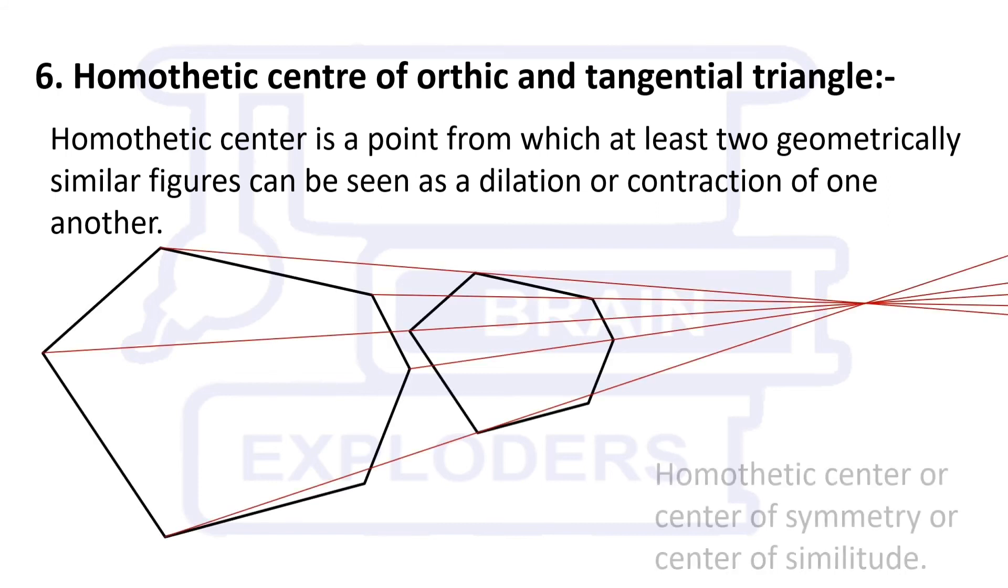On the screen, you can see that there are two similar hexagons and all the lines passing through the corresponding points of both the hexagons pass through the homothetic centre which is also called centre of symmetry and centre of similitude.